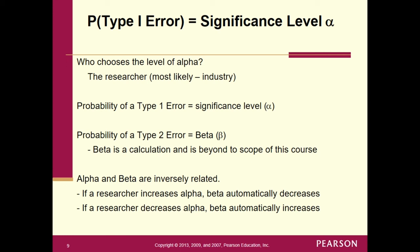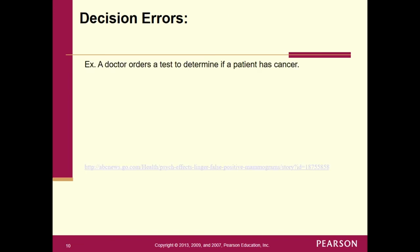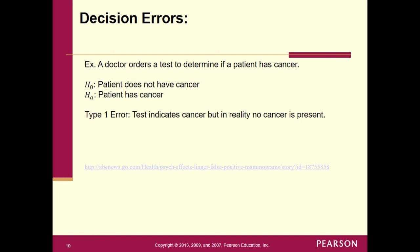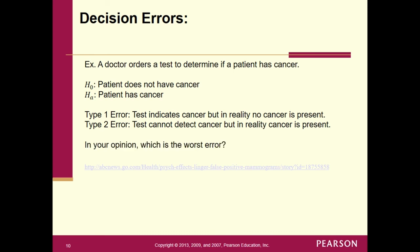Consider a doctor ordering a cancer test. The null hypothesis is that the patient does not have cancer; the alternative is that the patient has cancer. A Type 1 error: the test indicated cancer but in reality no cancer is present. A Type 2 error: the test cannot detect cancer but in reality cancer is present.